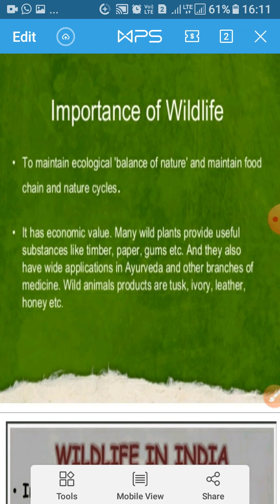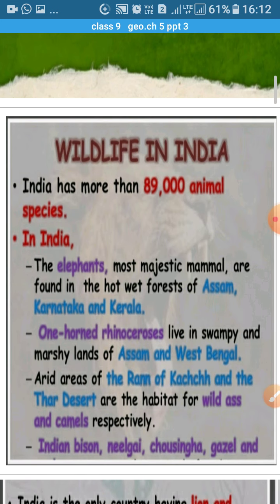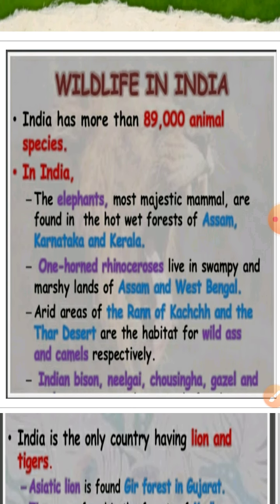There is a need to take steps to conserve these species. Let's find out the different wildlife in India, the major threats to this wildlife, and the steps taken by the government to improve their condition. India has more than 89,000 animal species.